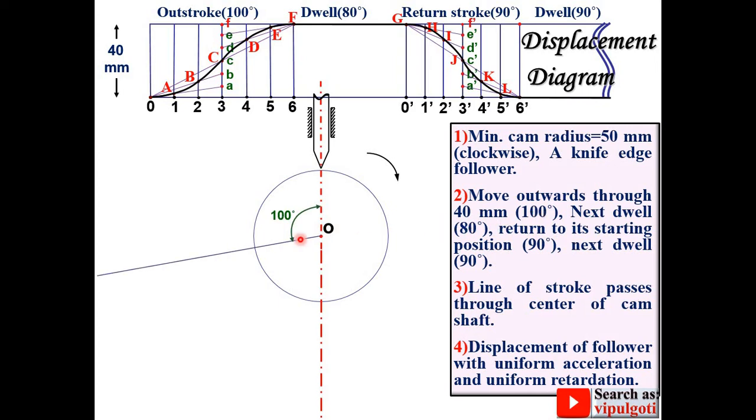So first 100 degree then 80 degree and then 90 degree. And so that automatically the remaining angle will be 90 degree. That you can do with the help of the protractor.